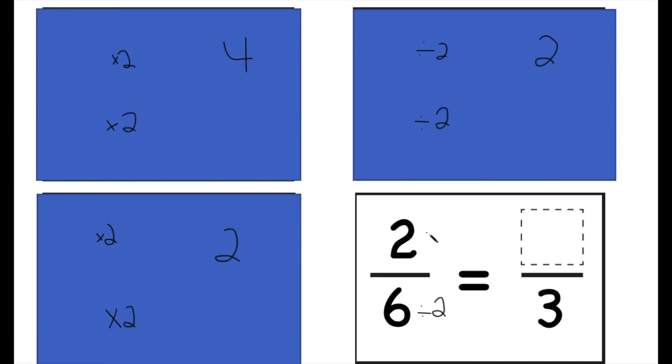6 divided by 2. Whatever I do to the denominator, I have to do to the numerator. 2 divided by 2 equals 1. So 2/6 is equivalent to 1/3.